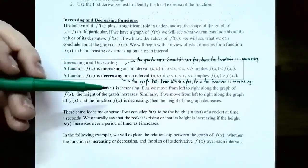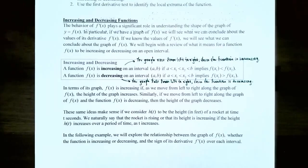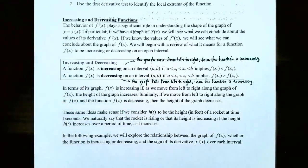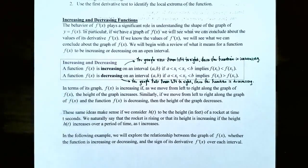In terms of the graph, f(x) is increasing if you move left to right and the height of the function increases, and decreasing if the height goes down. The same idea applies if we consider h(t) to be the height in feet of a rocket at time t seconds — the rocket is rising if its height increases as time increases. We're going to explore the relationship between whether the function is increasing or decreasing and the sign of its derivative f'(x).